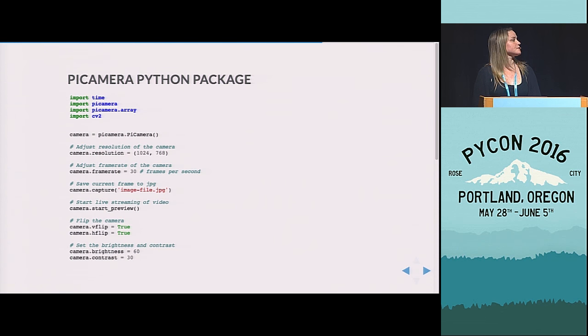And so this is just a few example pieces of code from the Pi camera package. It allows you to, from your laptop, change the resolution, the frame rate, the brightness and the contrast. So the Raspberry Pi is really easy to use for this function.